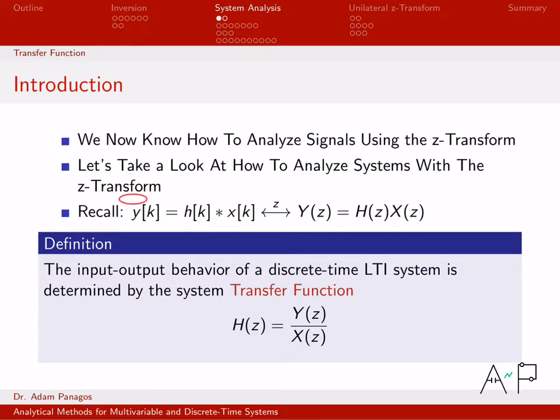We've talked about how convolution in time is multiplication in z. So if we take this equation into the z domain, we end up with this input output relationship: the output y(z) is related to the input x(z) via multiplication by h(z). If you solve for h(z), you can see that h(z) is the ratio of y(z) to x(z).